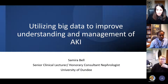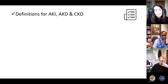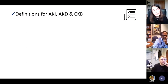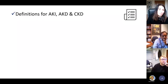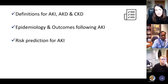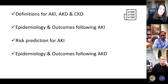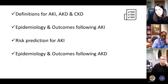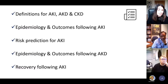I'm going to start by talking about the definitions for acute kidney injury, acute kidney disease, and CKD, and how these definitions have allowed us to examine epidemiology and hopefully impact on clinical care. Then I'll go on to the epidemiology and outcomes following AKI, then risk prediction models and how these can be implemented in practice, then the entity of acute kidney disease, and finally recovery of AKI and outcomes following recovery.